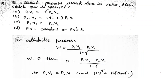Here we start with the first question — a thermodynamics question was asked: in the adiabatic process, work done is zero, then which one is correct? There are four options — because these are memory-based questions, some options may not be exact. In the adiabatic process, if work done is zero, which condition applies to the system? The formula for work done in an adiabatic process is: